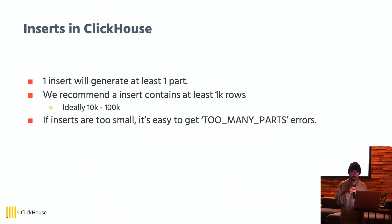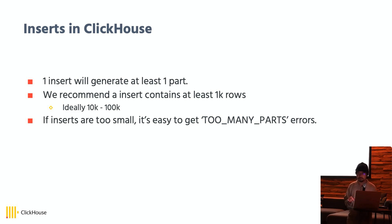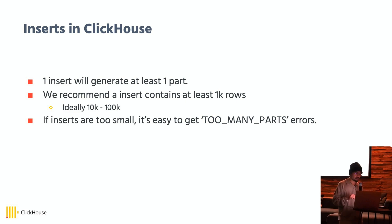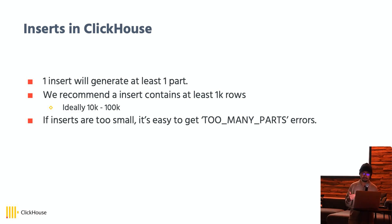Now let's begin. First, let's take a look at how ordinary inserts work in ClickHouse. As we know, one insert will generate at least one part in ClickHouse. One part physically means a directory which contains multiple files. So if the insert is very small, then the performance will be negatively influenced. In our official document, we recommend an insert should contain at least a thousand rows, but ideally from 10,000 to 100,000 to get better performance.